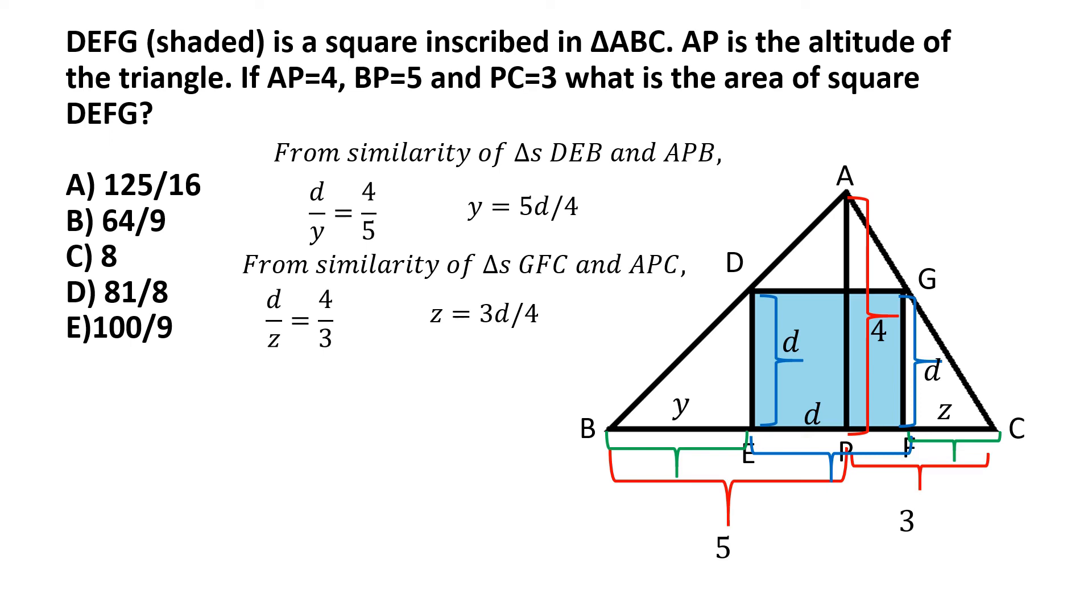So now consider the sum of the lengths BE, EF, and FC. So that's basically y plus d plus z. But that's equal to BC, the sum of those lengths. And what is BC? Well, BC is also BP, which is 5, plus PC, which is 3. So basically, we can write this equation.